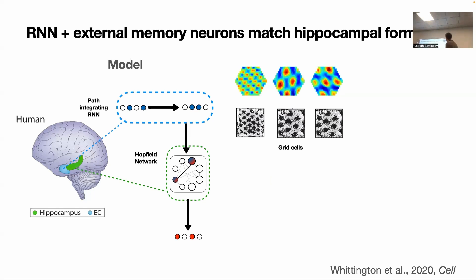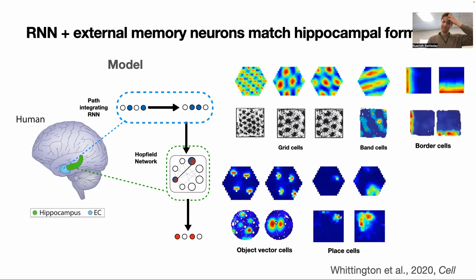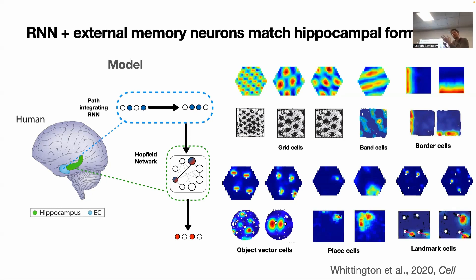For example, you train it, you observe things that look like grid cells. These are these famous cells. You observe band cells, place cells, border cells, object vector cells, and landmark cells. So you observe all of these cell types in this model.